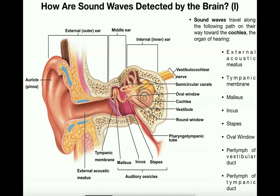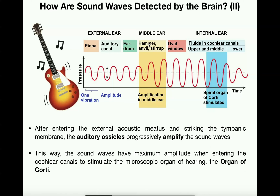However, the tympanic membrane is in direct contact with the three auditory ossicles — the malleus, incus, and stapes, also known by their common names: hammer, anvil, and stirrup. Notice that the amplitude of the sound waves or vibrations is actually increasing. So between the tympanic membrane and the oval window, the function of the auditory ossicles is to amplify the signal — to amplify the vibrations.